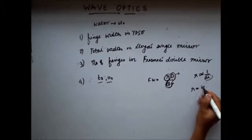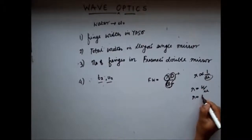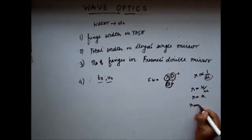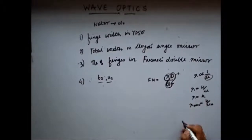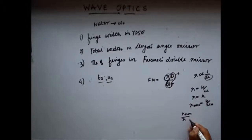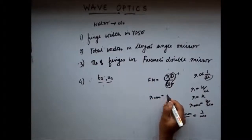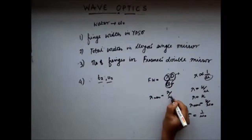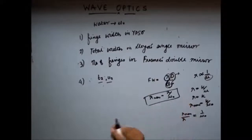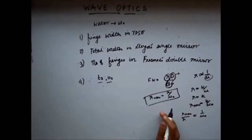Let's say lambda is equal to k by mu. So when the medium is vacuum, lambda is equal to k. When the medium is water, lambda is equal to k by mu naught. So you see that lambda new divided by lambda is equal to 1 by mu naught, or the new lambda is equal to lambda by mu naught. So the new lambda is less than the old lambda.